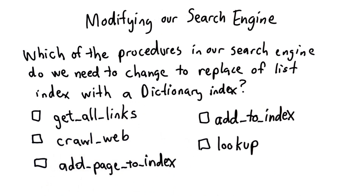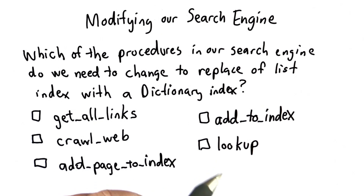And we had `lookup`, which would take a keyword and give us the list of all the URLs where that keyword appears. To answer this, you may need to look at the code — you'll find it on the website. Think about which of these procedures will need to change to replace the list index with the dictionary index.